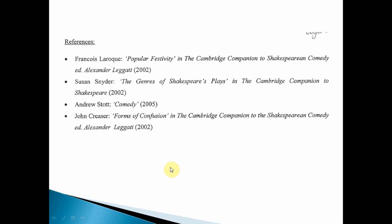This is much better. So you've got Francis Laroque — that's the name of the author of the article. The article is called 'Popular Festivity' in The Cambridge Companion to Shakespearean Comedy — that's the book. Notice they've italicised the title of the book, edited by Alexander Leggett, in 2002. So it's telling us who the writer of the article is, what the article's called, what the book it's from is called, who edited the book, and when it was published. That is pretty good. Susan Snyder, 'The Genre of Shakespeare's Plays' in The Cambridge Companion to Shakespearean — if you've got the articles I gave you, I've written this information on the photocopies. Andrew Stott, Comedy, 2005. That's much better and would do the job, pretty much.